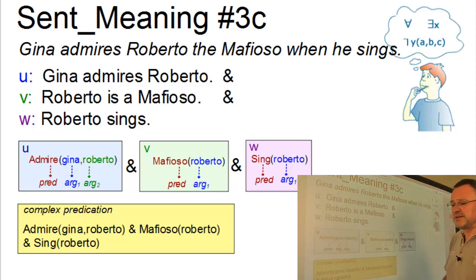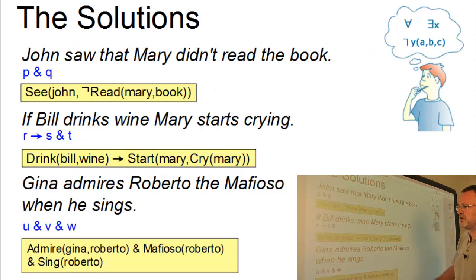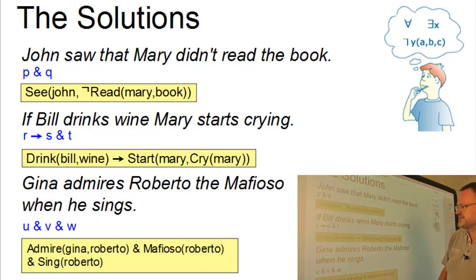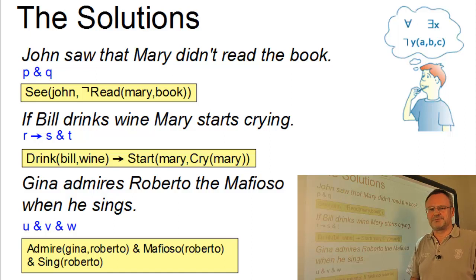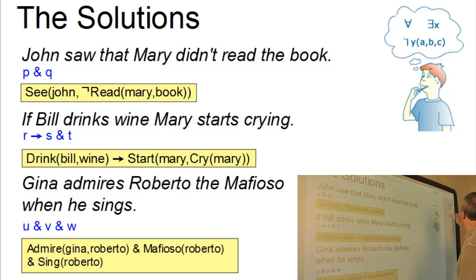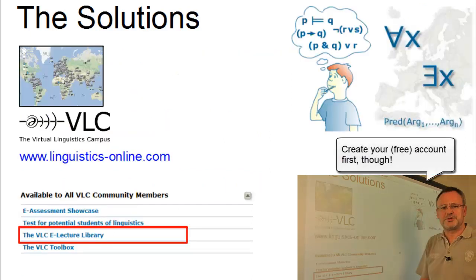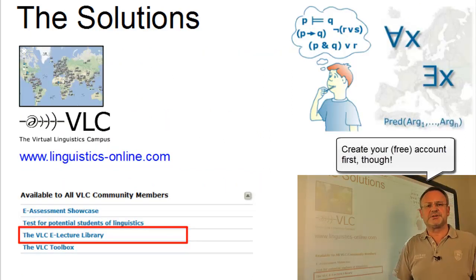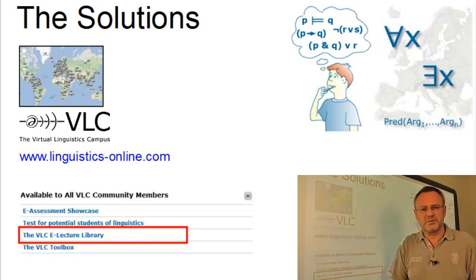That's it again. Here is an overview of our solutions: we have two conjunctions and one implication. If you want the print versions of the solutions, as usual log in to the Virtual Linguistics Campus, consult the VLCE lecture library, and there you are. Thank you once more and see you again.